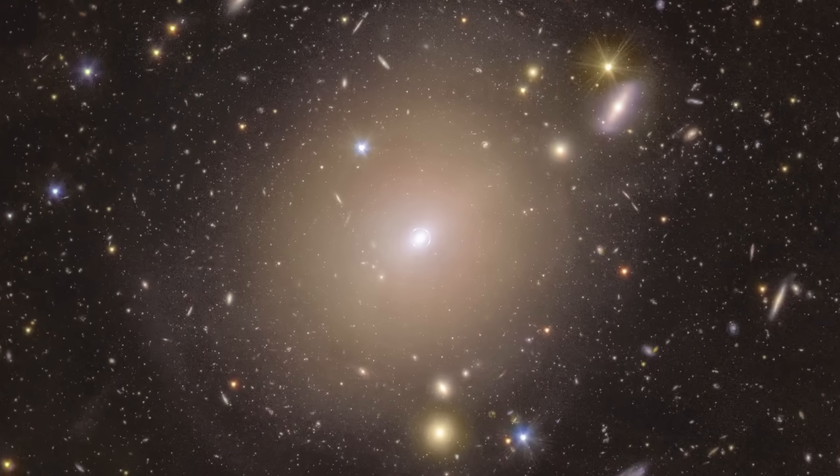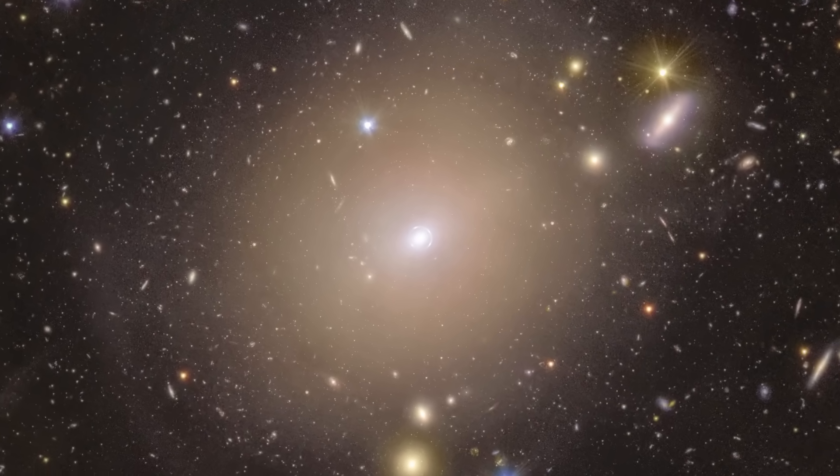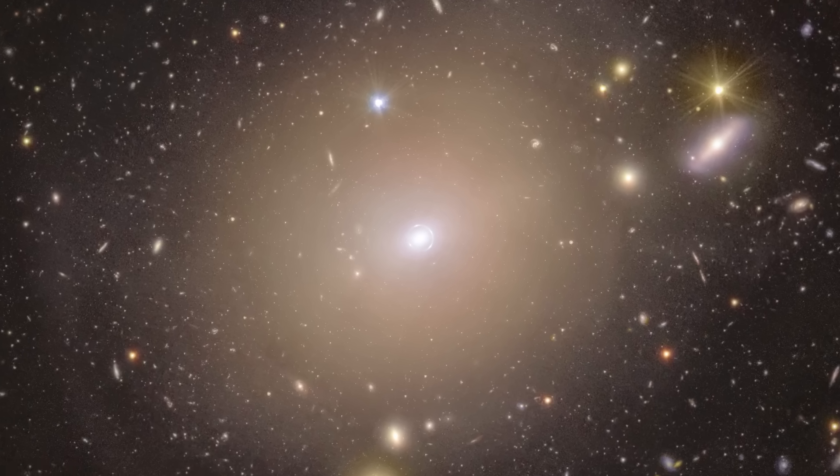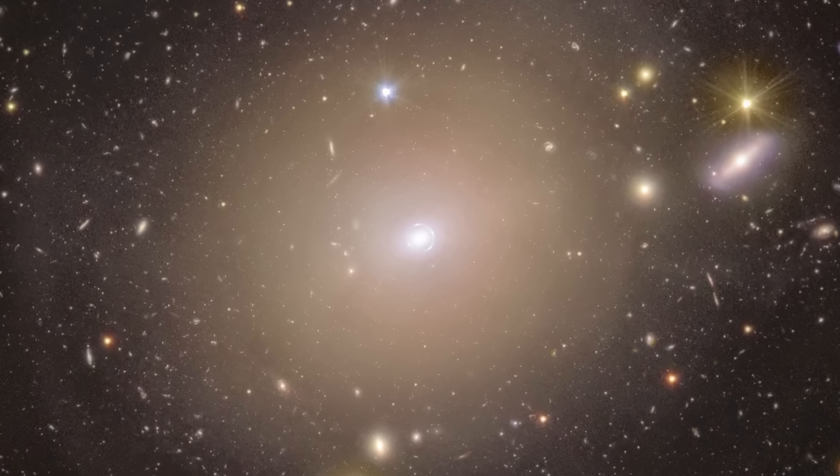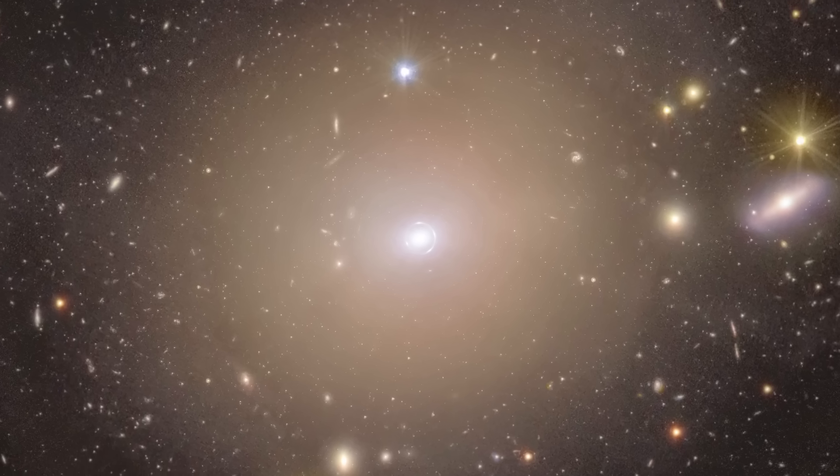This incredible ring appears around the galaxy NGC 6505, forming a glowing halo of light. But what you're really seeing is the warped image of a background galaxy located a staggering 4.4 billion light-years away.